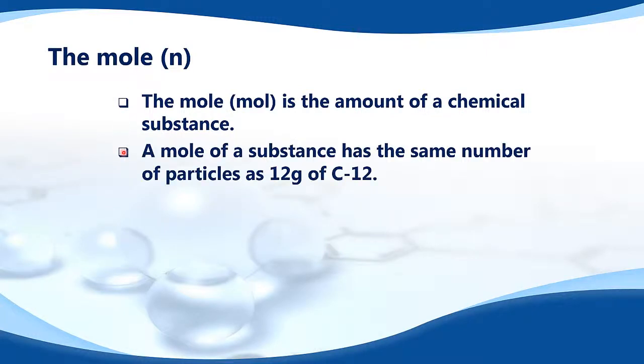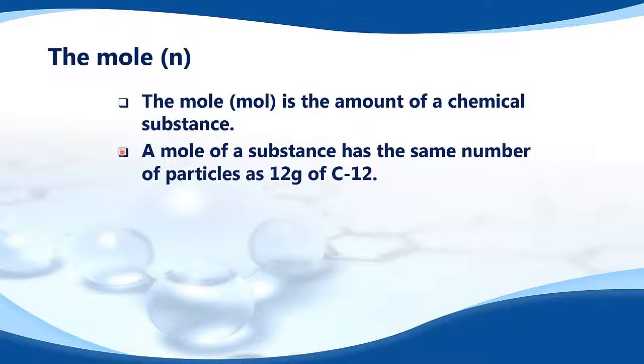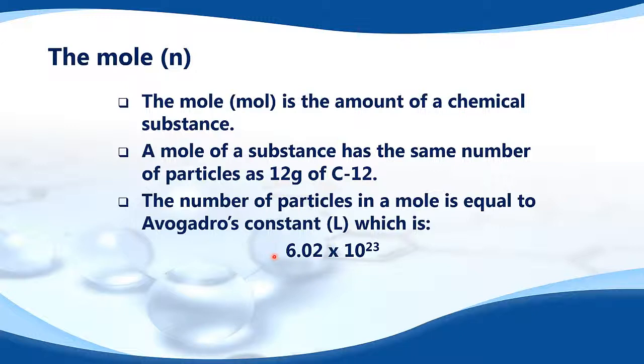This is the definition of a mole. A mole of a substance has the same number of particles as 12 grams of carbon-12. The number of particles in a mole is equal to Avogadro's constant, which is 6.02 x 10²³. As you can see, it's a very large number. So if you have a mole of a chemical substance, it contains this many particles.